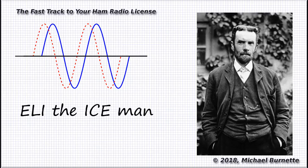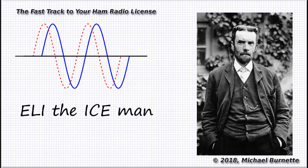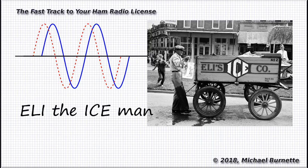Ever since that fateful — and by the way, completely fictitious — day, hams and other electronics students have used ELI the ICE man to remember that across an inductance, L, E (voltage) comes before I (current): E leads I. Across a capacitance, C, I leads E. ELI the ICE man. And there he is, right there — it's an absolutely real picture.